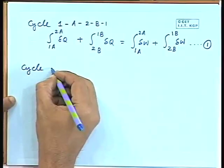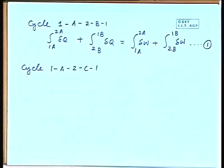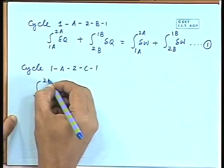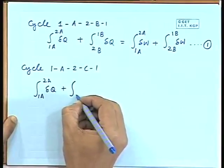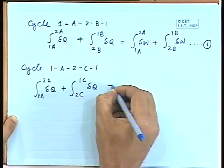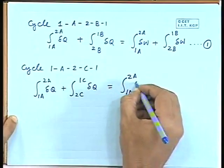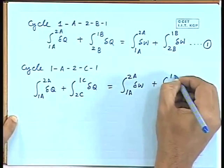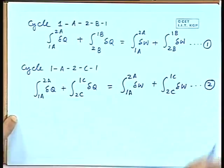For Cycle 1A2C1, we get: integral from 1A to 2A of dQ plus integral from 2C to 1C of dQ equals integral from 1A to 2A of dW plus integral from 2C to 1C of dW. Let us denote this as Equation 2.